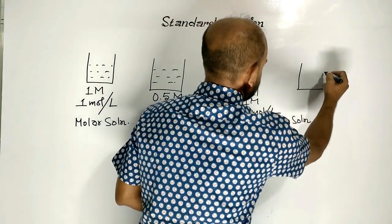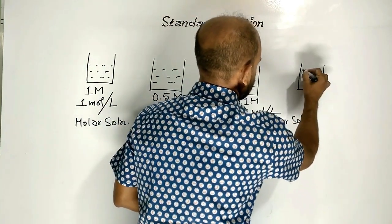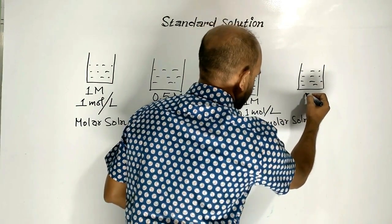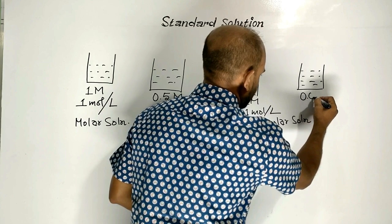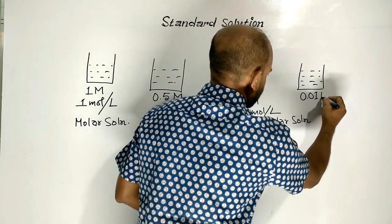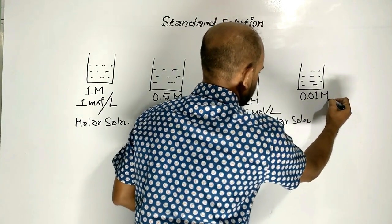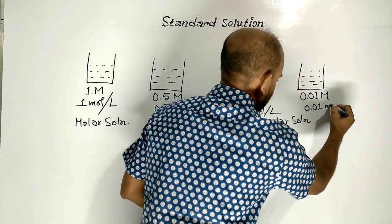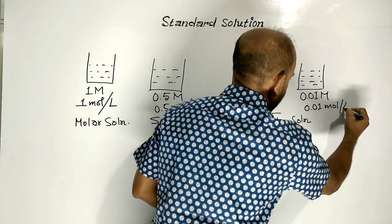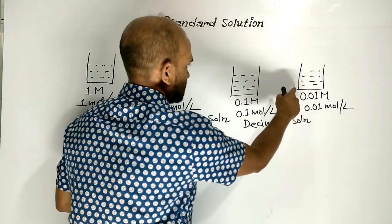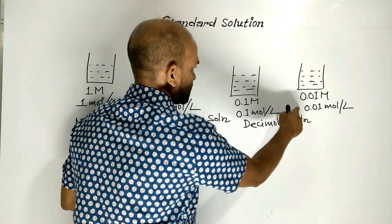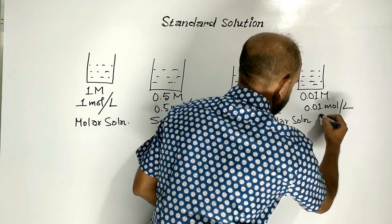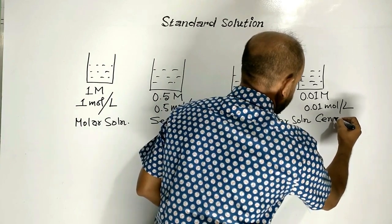Another solution of standard substance. Suppose its concentration is 0.01 molar, meaning 0.01 mole per liter. So this is the solution. Its concentration is known. The name of this solution is centimolar solution.